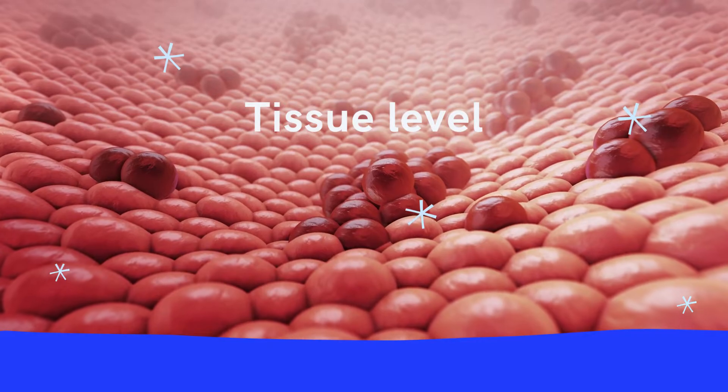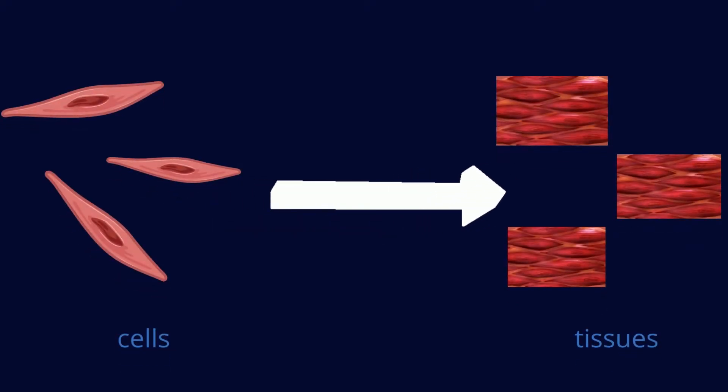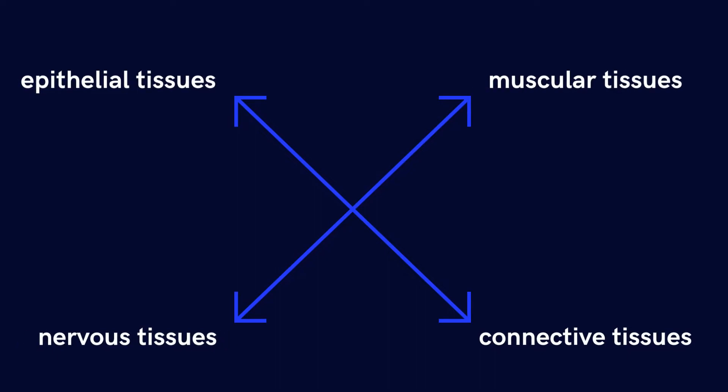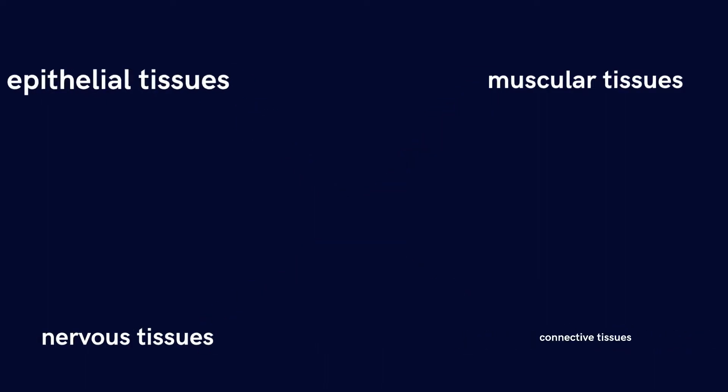The third level is the tissue level. Tissues of the body are formed by a group of cells and the material that surrounds them. In these pictures, we are seeing three similar models of smooth muscle tissues. In our body, we have four types of tissues: epithelial tissues, muscular tissues, nervous tissues, and connective tissues.